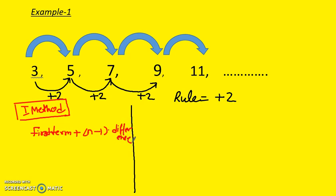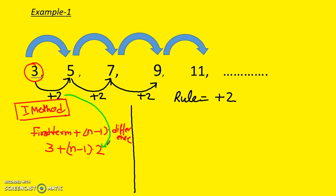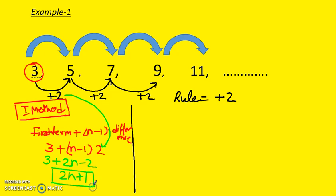Our first term is 3, so we write 3 plus (n minus 1) times d, and d is the difference which is 2. If we multiply out, it is 3 plus 2n minus 2, so 3 minus 2 gives plus 1, and we have 2n. So the nth term is 2n plus 1.